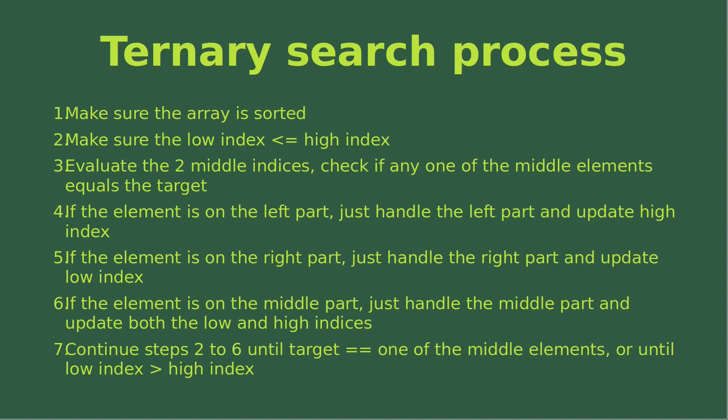If the element is expected to be in the middle part, we just handle the middle part and then we update both the low and high indices. And then we just continue steps two to six until our target is equal to one of the middle elements, or until the low index is larger than the high index, which doesn't make sense.